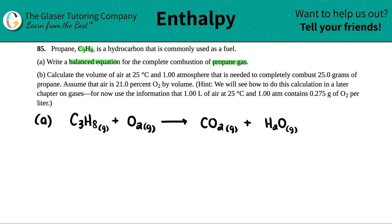Now we just have to balance — you could pause the video and try it yourself. I have three carbons, so I put a 3 in front of CO₂. I have eight hydrogens, so I put a 4 in front of H₂O (4 × 2 = 8). Counting oxygens: six from CO₂ plus four from H₂O gives ten total, so I put a 5 in front of O₂ (5 × 2 = 10). Letter A is done.